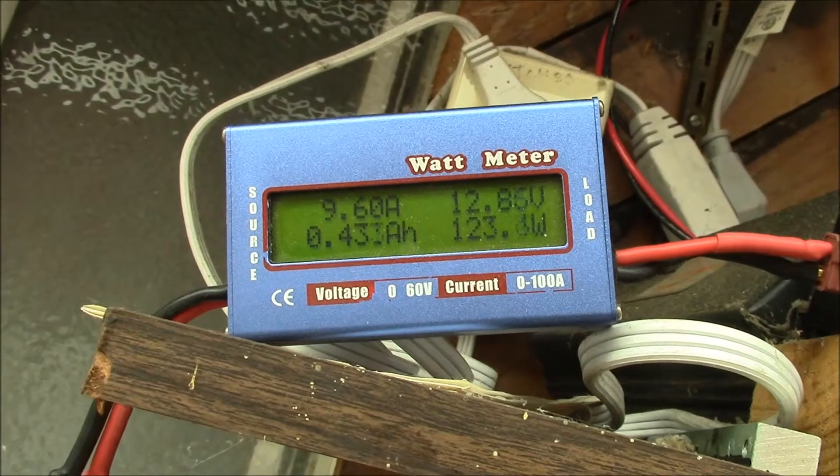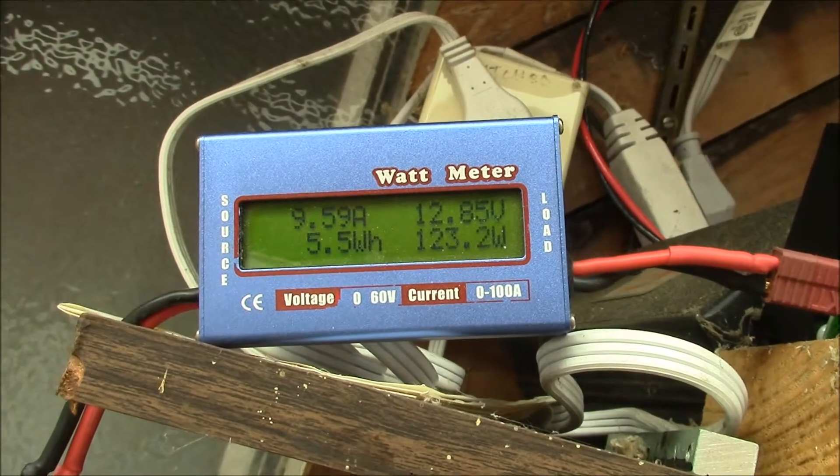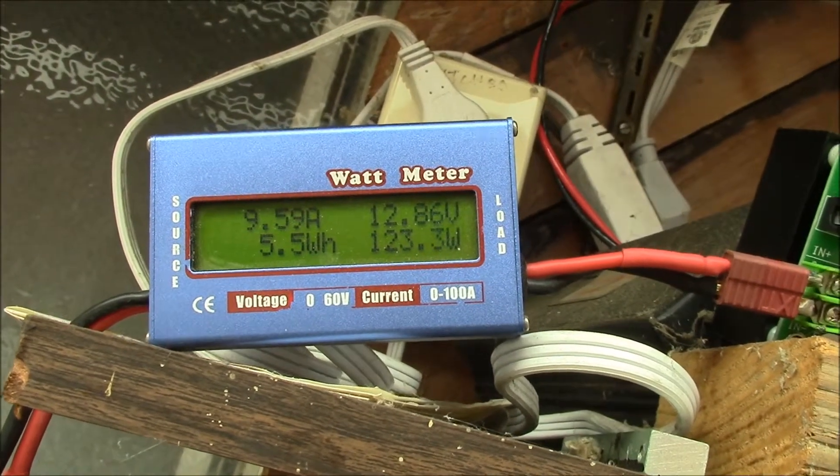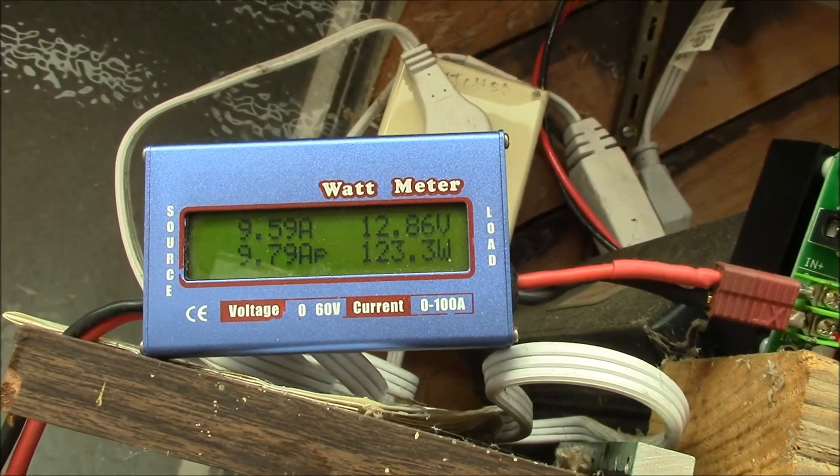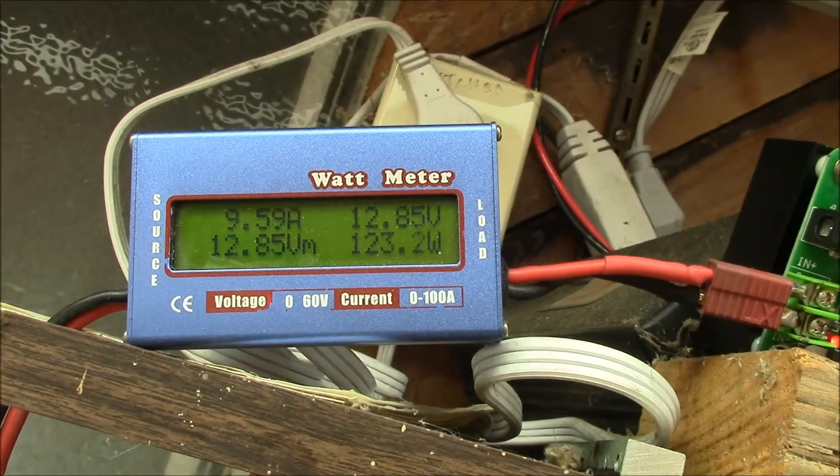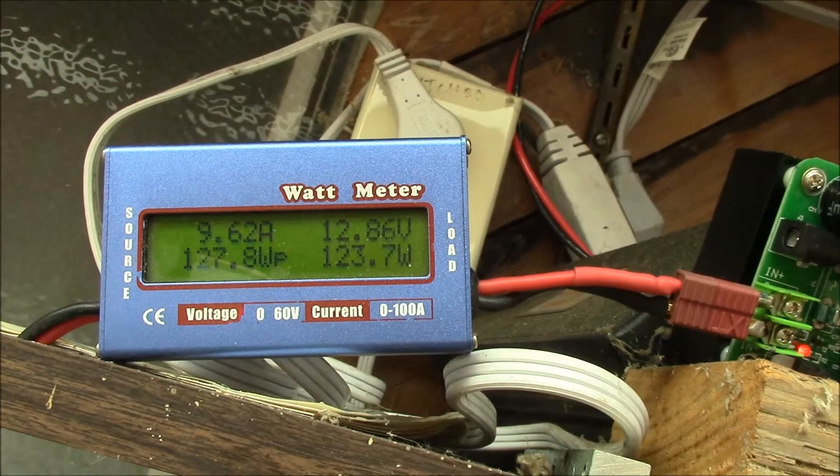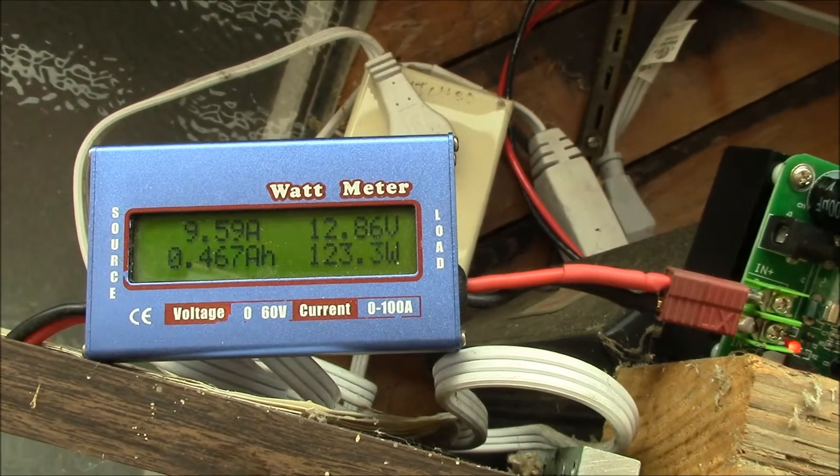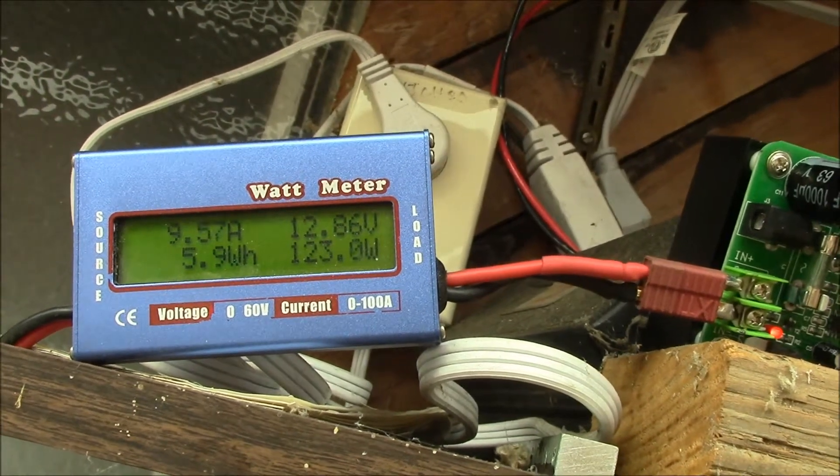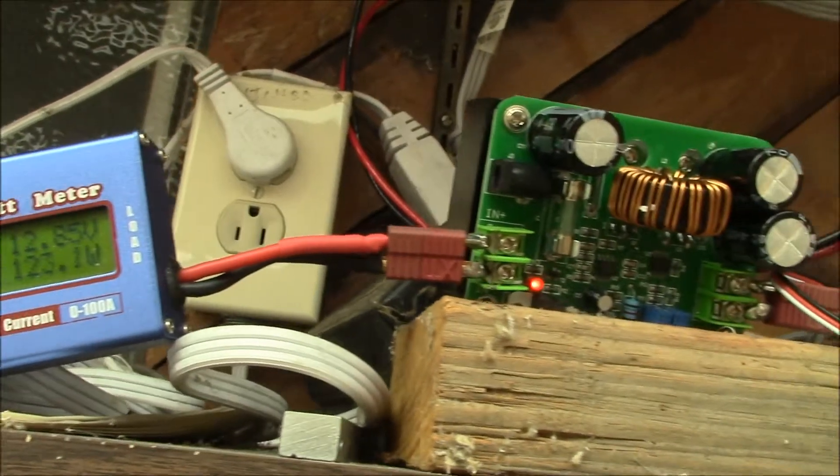Good morning YouTube, checking out the efficiency of this DC to DC boost converter. You can see I'm running about 9.6 amps at just about 13 volts, so that's 123 watts going through the boost converter.